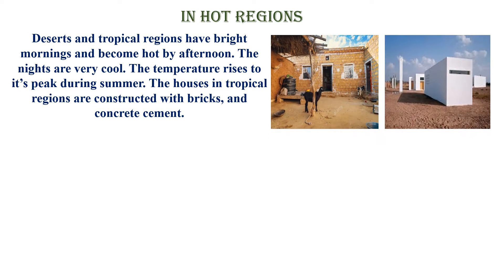Coming to hot regions. Deserts and tropical regions have bright mornings and become very hot by afternoon. Early morning the sun comes out, and it becomes very hot by afternoon. The nights are very cold. The temperature rises to its peak during summer because it is a desert area. The houses in tropical regions are constructed with bricks and concrete cement.